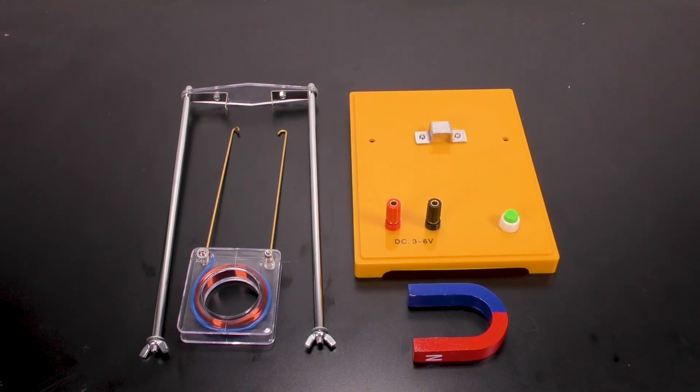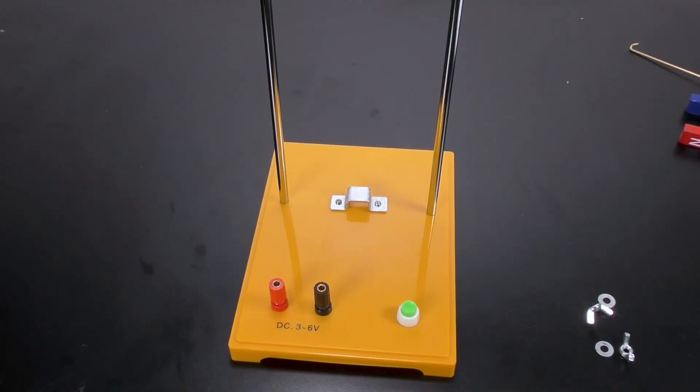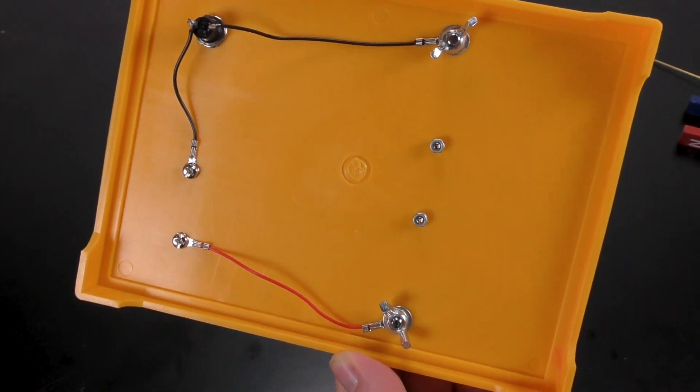The first thing you need to do is to assemble the apparatus. Insert the upright supports underneath. Place on the connecting wires, washers, and wing nut.